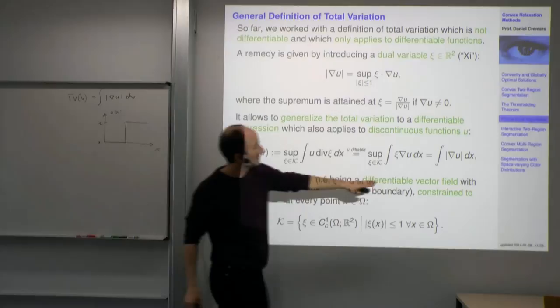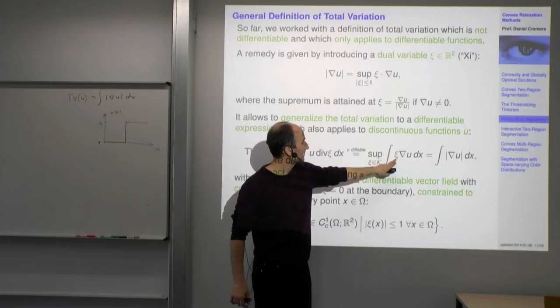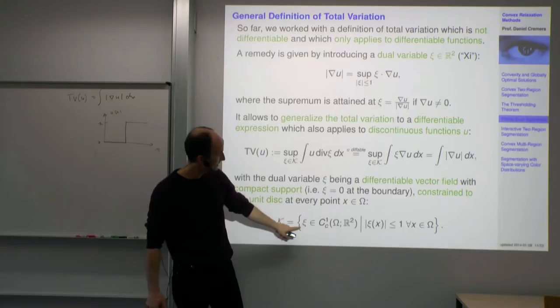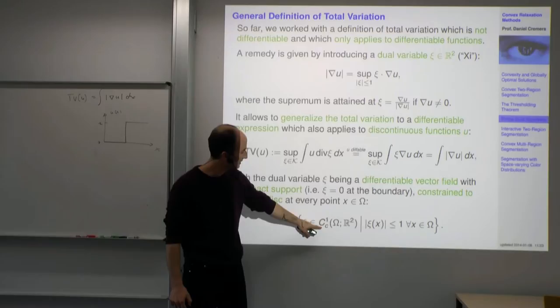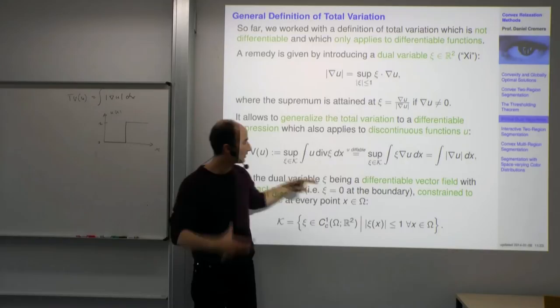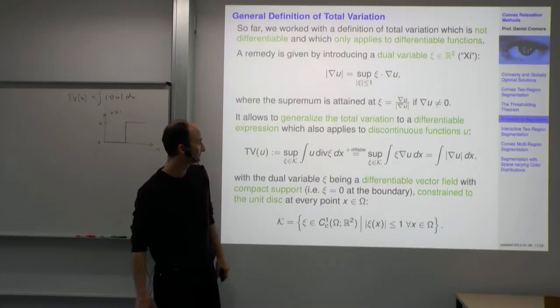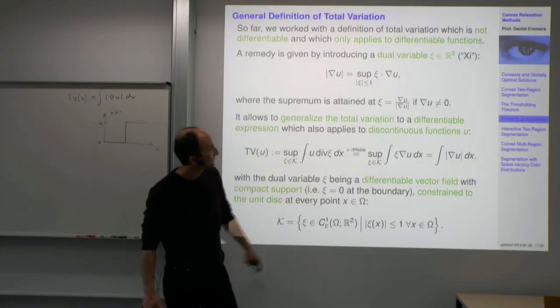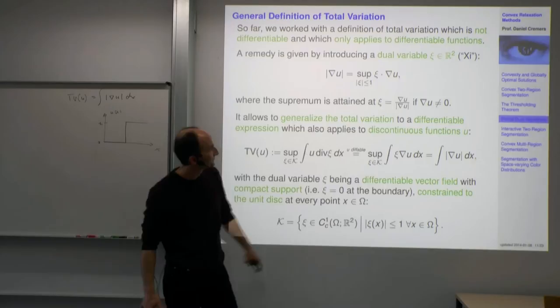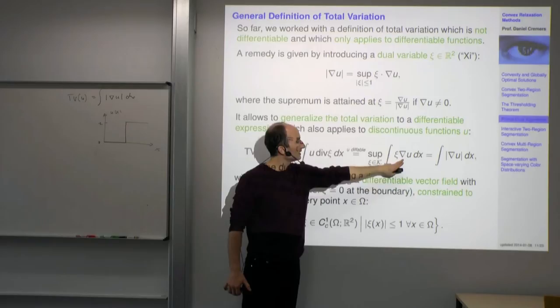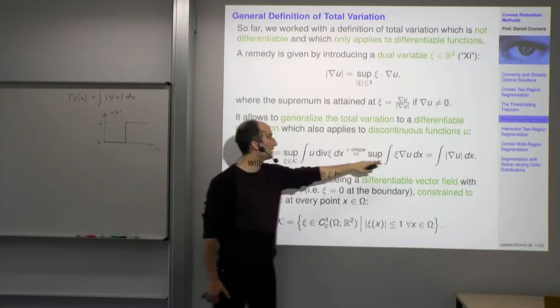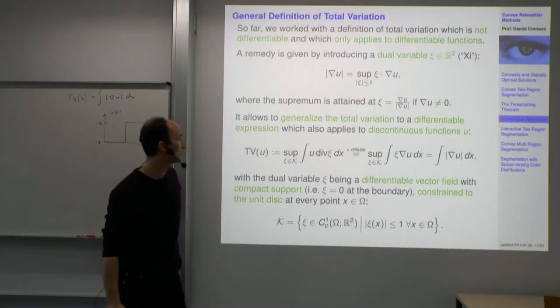Once you insert that into the definition, you get xi times nabla u and then the supremum over xi, where the vector fields xi are continuous differentiable vector fields with compact support — meaning zero at the boundary of the domain omega — and bounded by 1, so the length is no larger than 1.